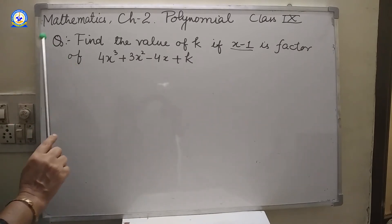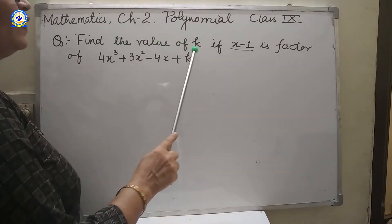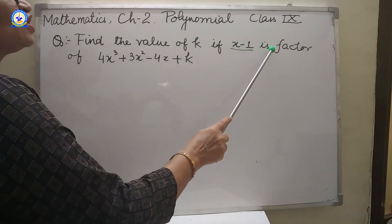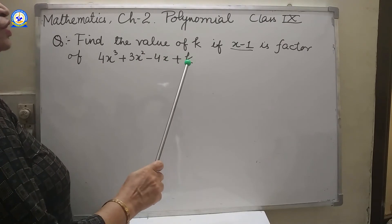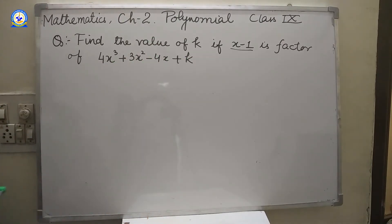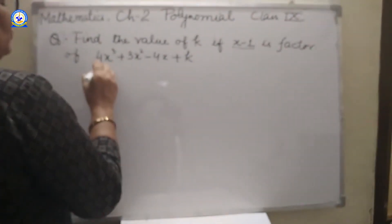Here is a sample question. Find the value of k if x minus 1 is a factor of 4x cube plus 3x square minus 4x plus k. For this, we will see that factor theorem will be applied.